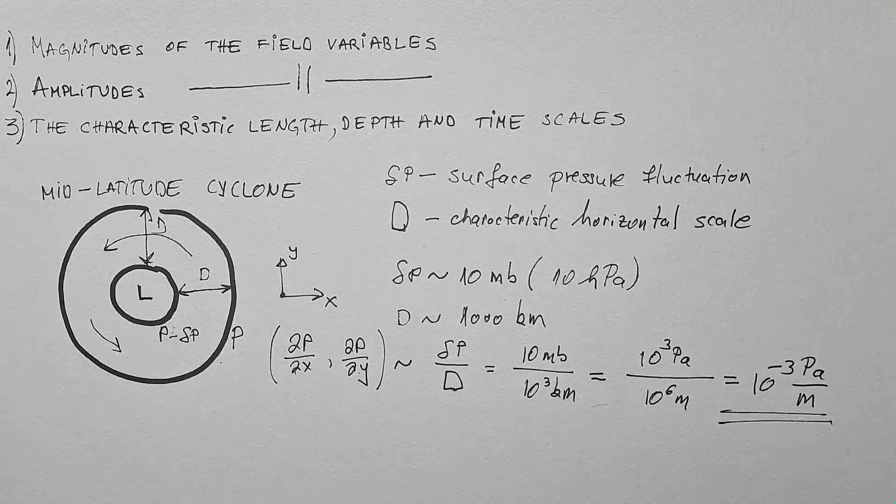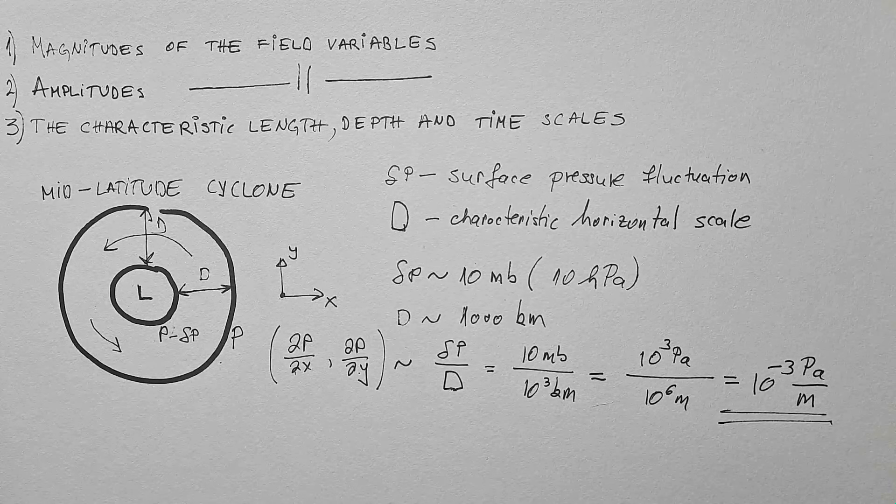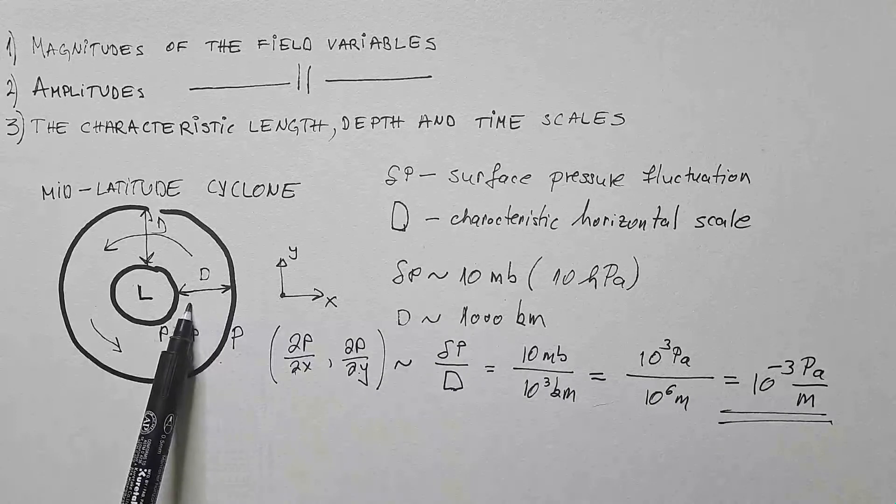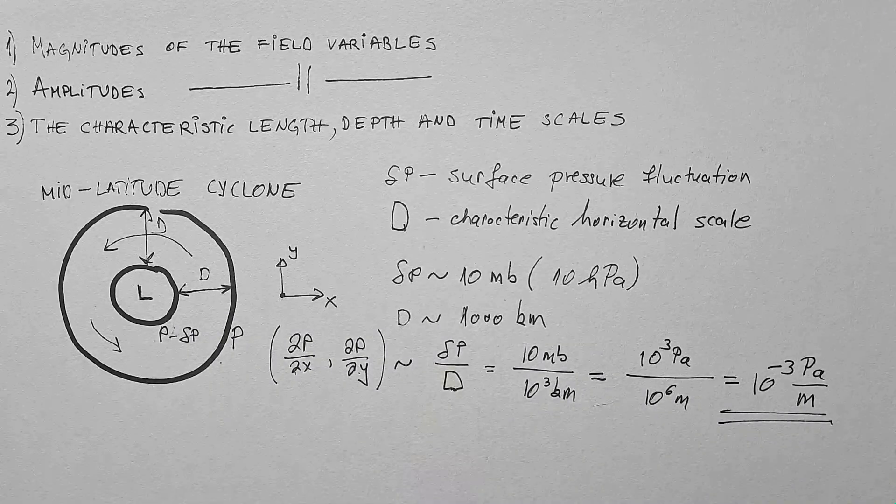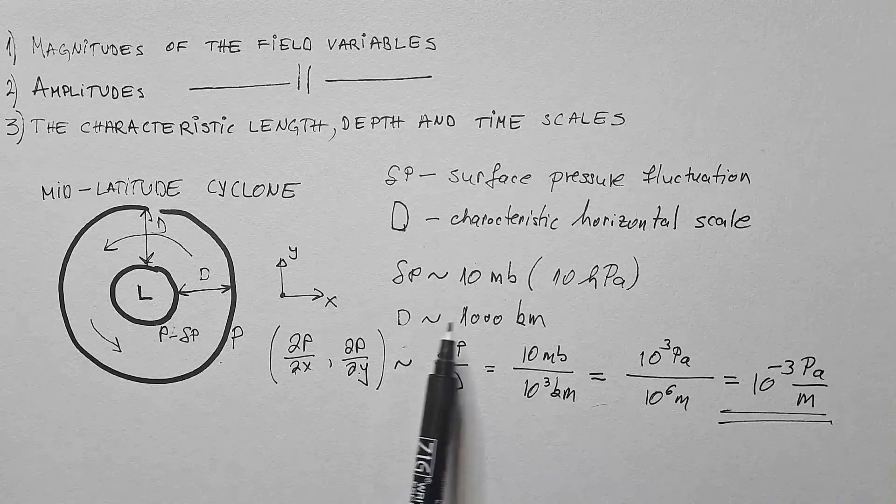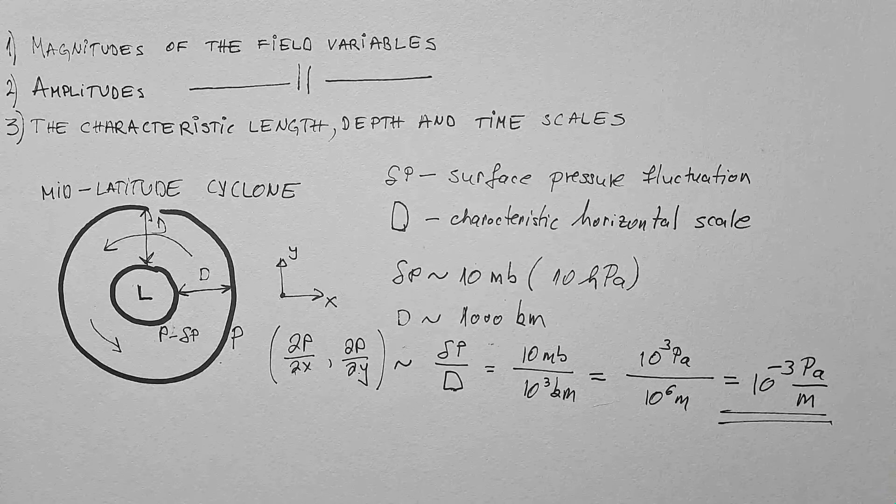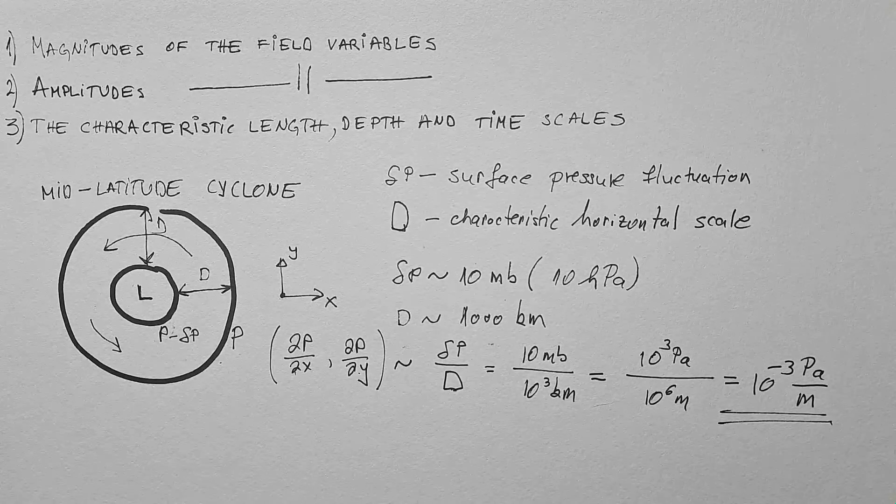And this should be, I just add three more to get meters, 10 to the power 6 meters. Which means this scales as 10 to power minus 3 pascals per meter. Now, you might be not impressed with this whole work, but you should. Because the same pressure drop of 10 millibars can occur in a tornado vortex over the characteristic length of approximately 100 meters.